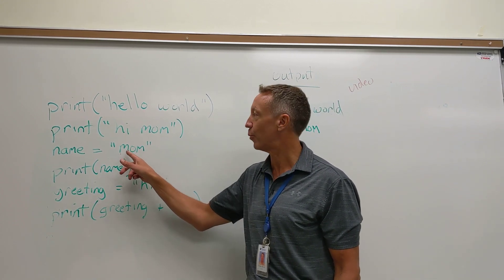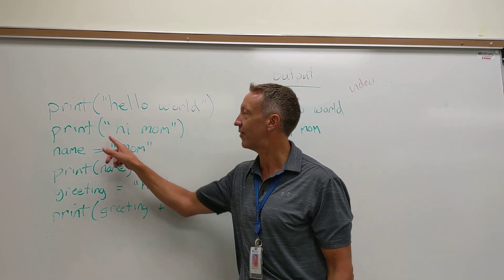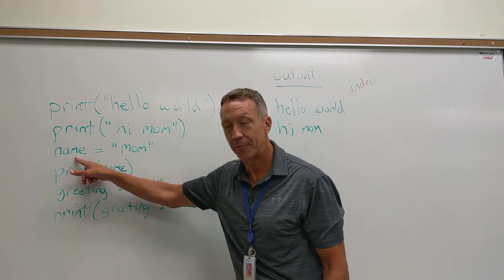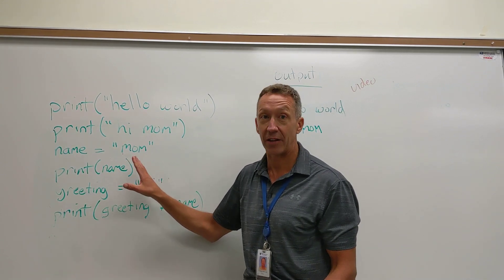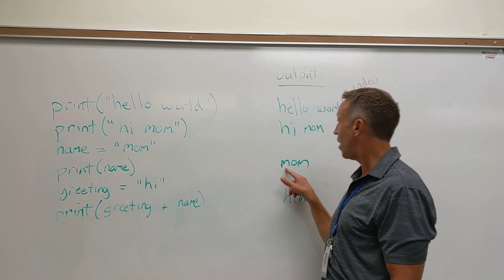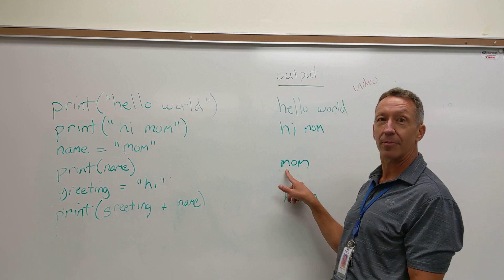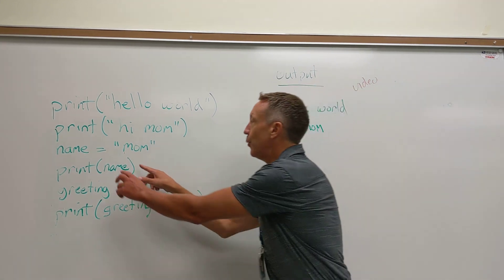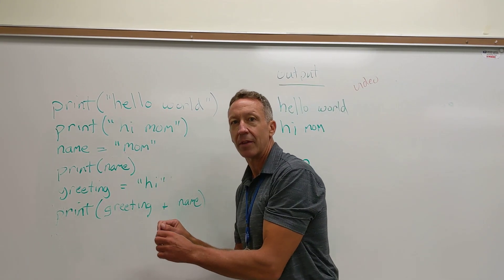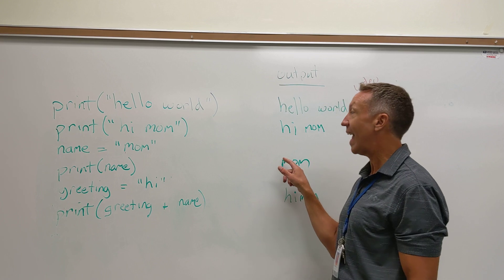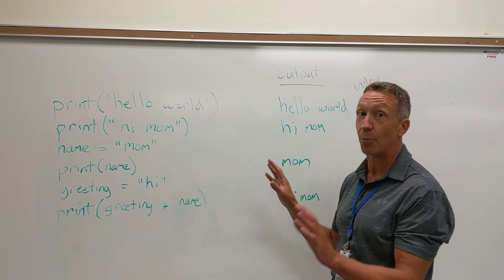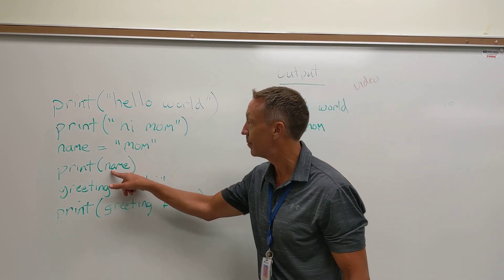When we type this line of code, by substitution, whatever is currently stored in the variable name — because the word name there without double quotes is used — mom prints out. If you have double quotes around the word name, then the letters N-A-M-E would print out. So don't put double quotes here.